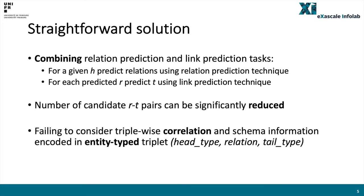A straightforward solution to this problem is to combine the relation prediction and link prediction tasks. For a given head, we first predict a set of relations using a relation prediction technique, and then predict the tail using a link prediction technique for each predicted relation. Subsequently, with a small set of predicted relations, the number of candidate relation-tail pairs fed to the link prediction technique can be significantly reduced.